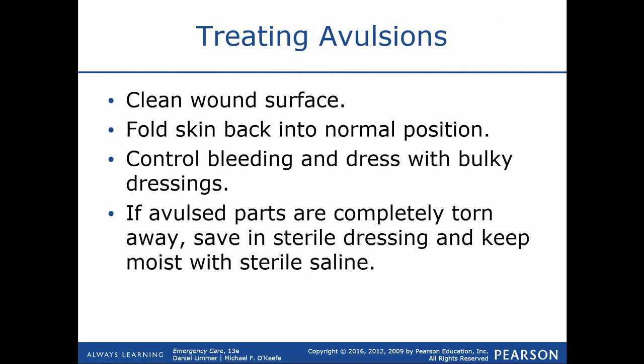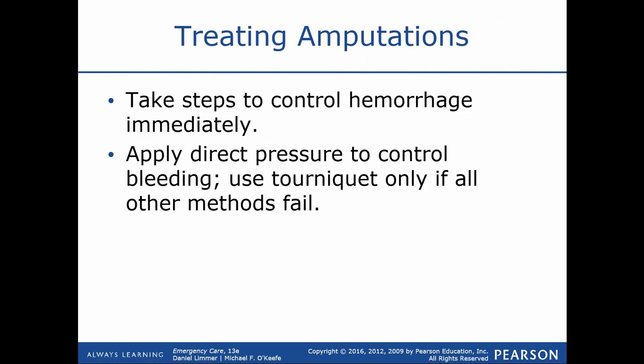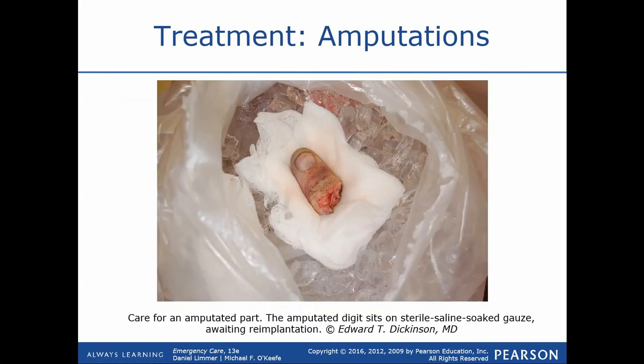For avulsions, simply fold the skin back, cover it up, keep it clean, irrigate if appropriate, and care for ABCs and shock — that's going to be the central theme to all of our trauma care. With amputations, direct pressure is an option if appropriate, but I would also recommend a tourniquet instead, because you're going to have a difficult time holding direct pressure against the end of an amputation, especially given how jagged and complicated that tissue trauma is going to be.